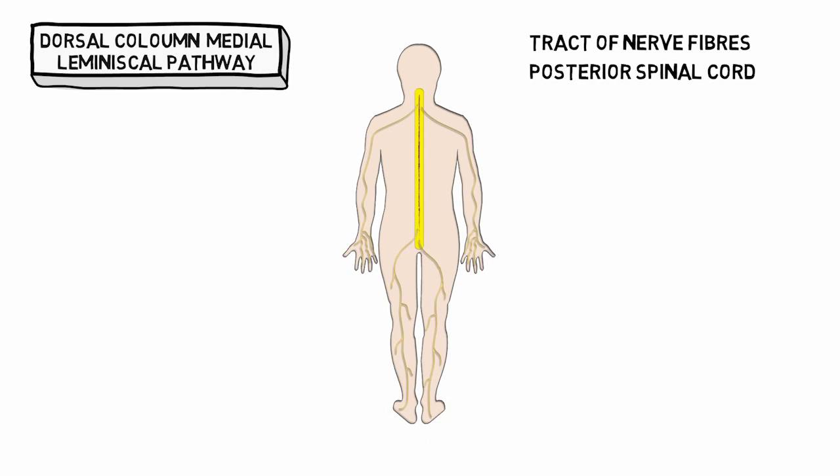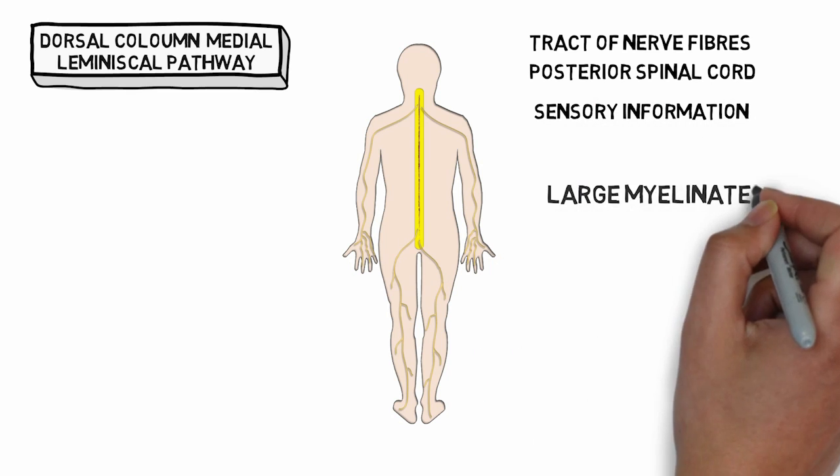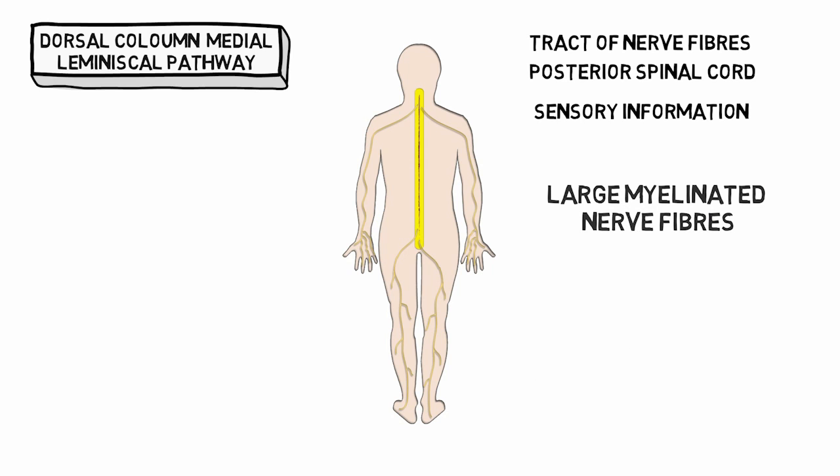These nerve fibers carry sensory information from all over the body to the brain, and this tract is composed of large myelinated nerve fibers which carry impulses at velocities of about 40 to 110 meters per second.